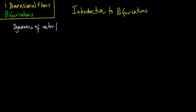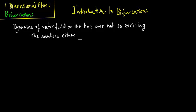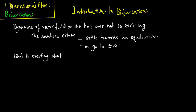Dynamics of vector fields on the line are not so exciting. The solutions either settle towards an equilibrium or go to plus or minus infinity. So what is exciting about one-dimensional systems? The answer turns out to be their dependence on parameters.